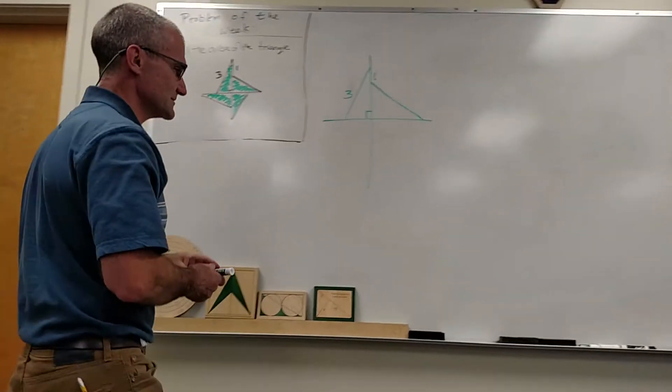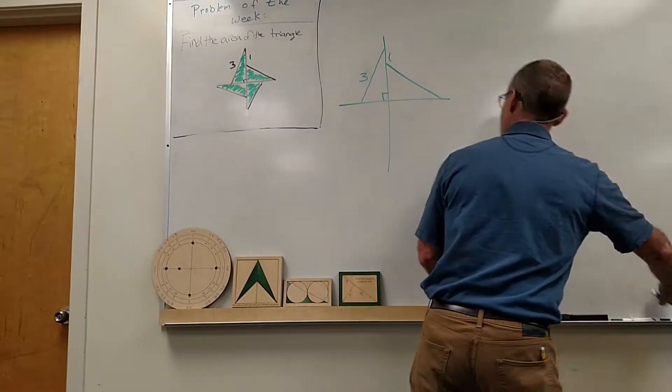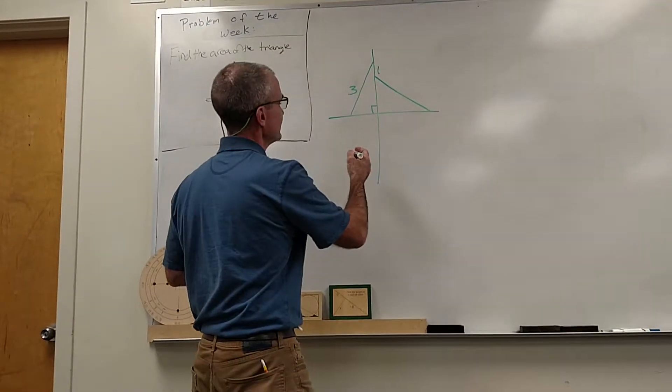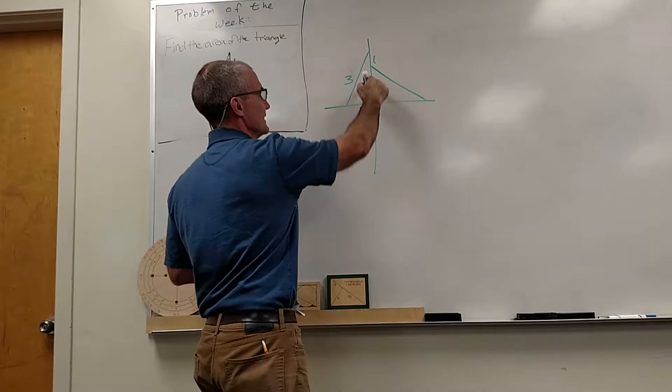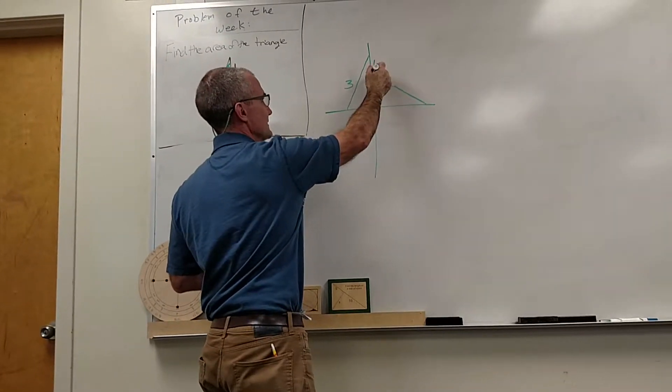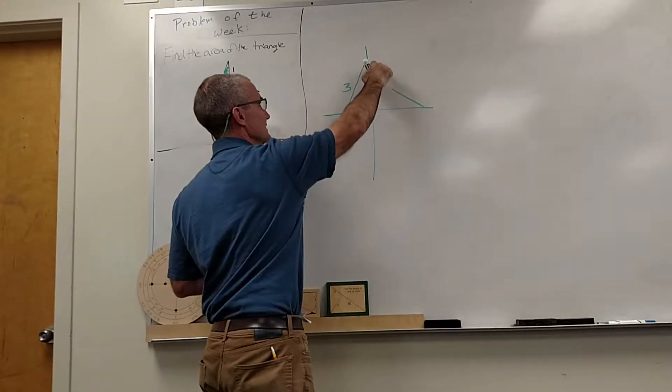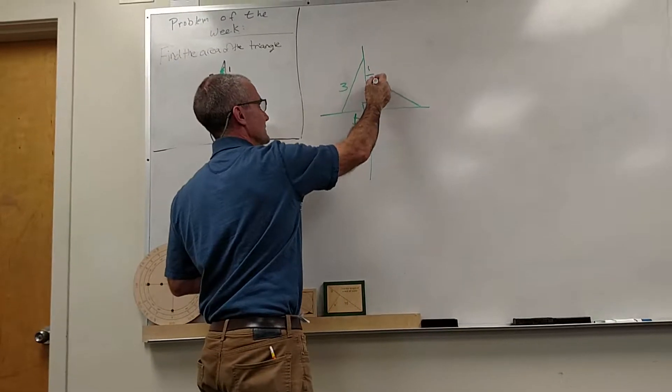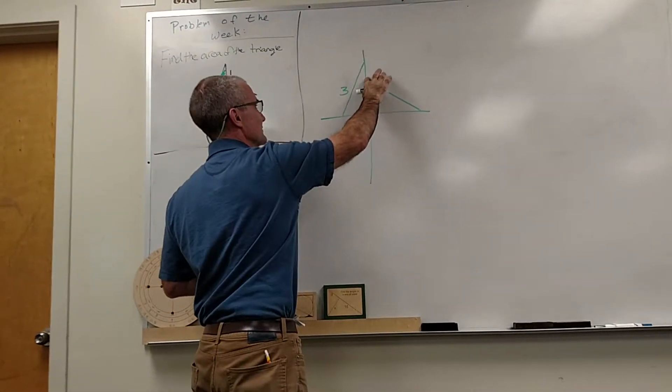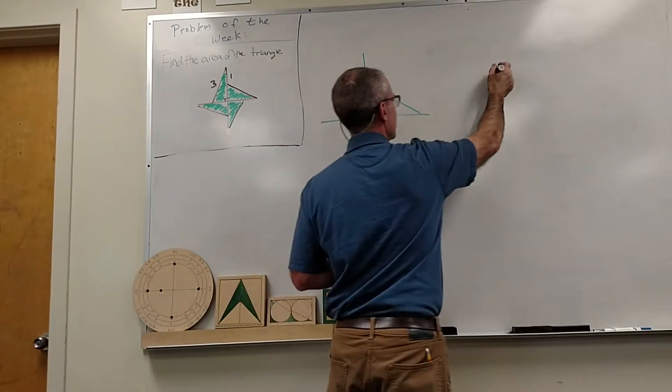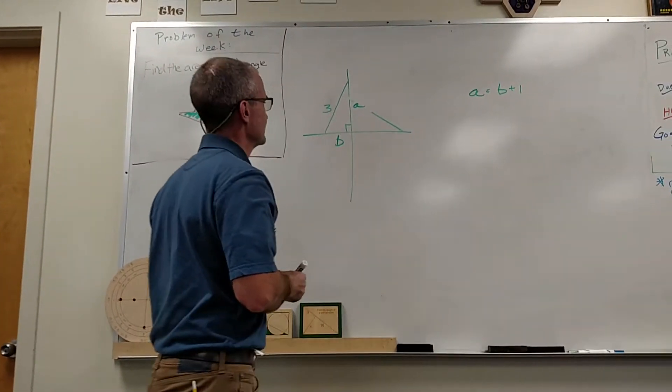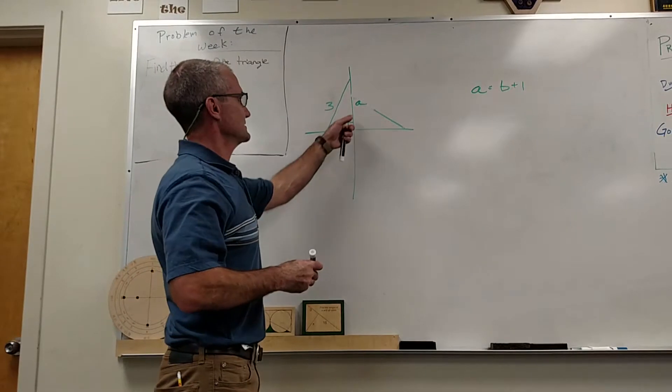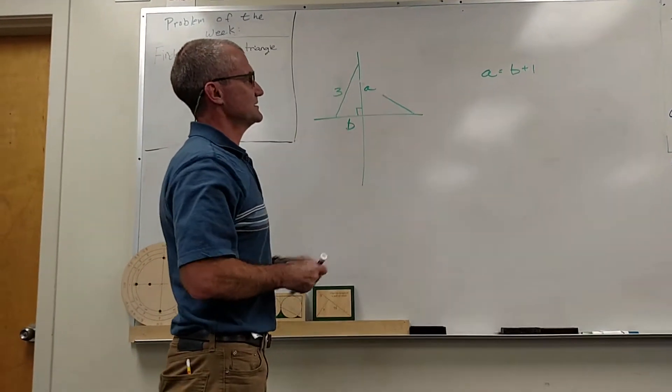Okay, so the algebraic solution is, if this is three, I'm going to call this side B. And then this side right here is going to be the same as this side. So this side will be A. But I can see that A is equal to B plus one. Right? So this is the same as a shorter leg plus an additional one.